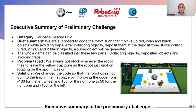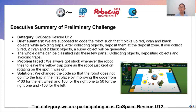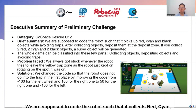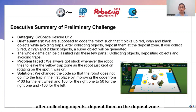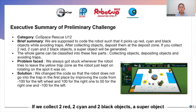Executive Summary of the Preliminary Challenge: The category we are participating in is GoSpace Rescue U12. We are supposed to code a robot such that it picks up red, cyan, and black objects while avoiding traps. After collecting objects, deposit them in the deposit zone. If you collect two red, two cyan, and two black objects, a super object will be generated.